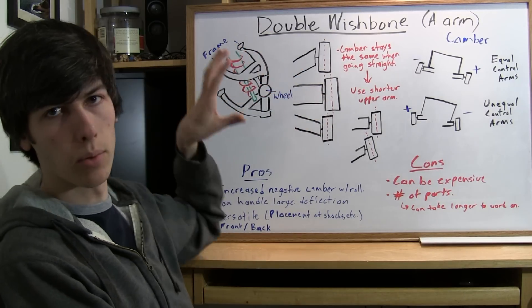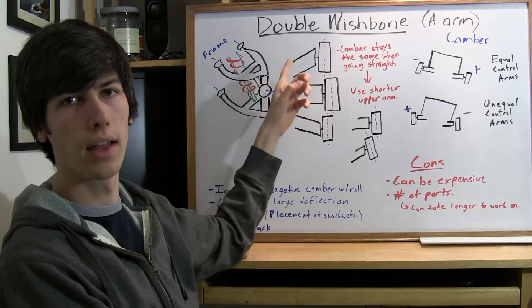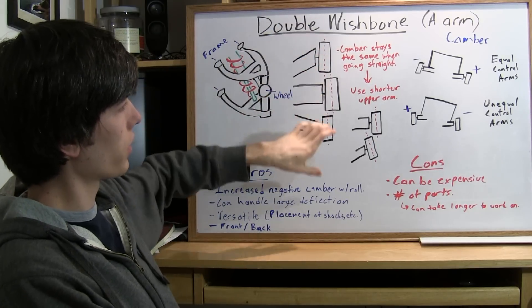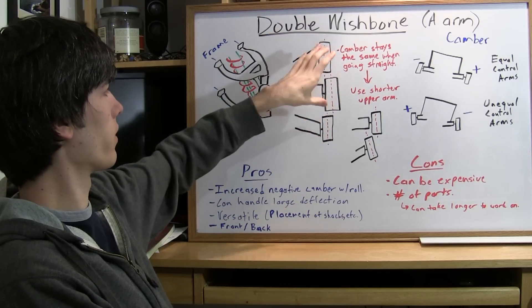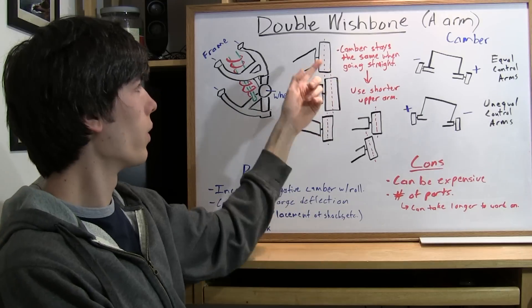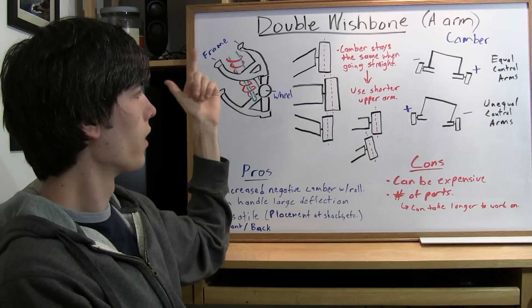So originally double wishbone suspensions use two control arms of equal length and the advantage of this is that as you have a positive or negative travel of this vertical motion of the tire, say you're going straight and you hit a bump and the tire goes up, well your camber angle is going to stay the same when you're going straight.